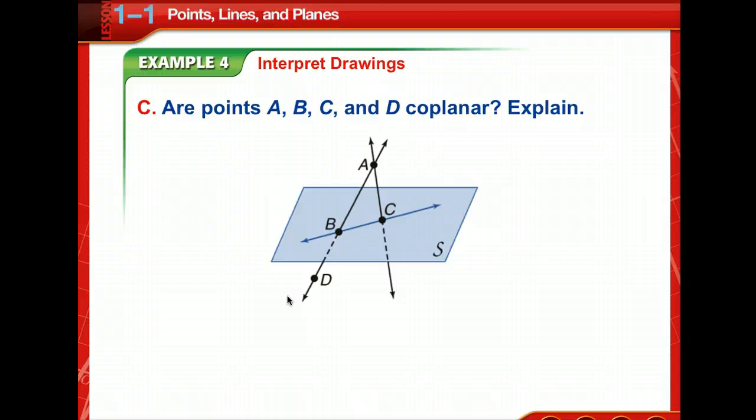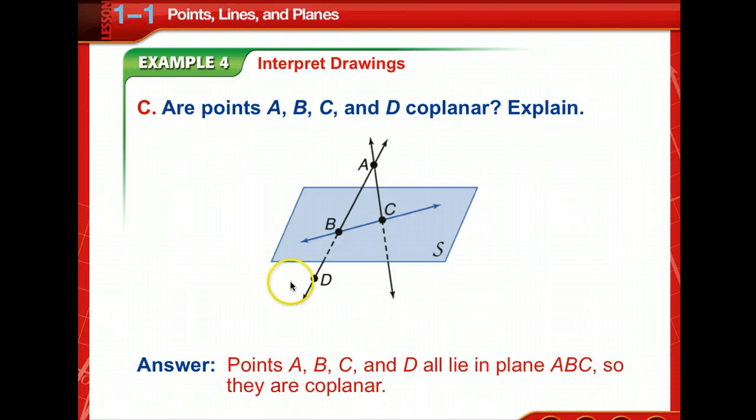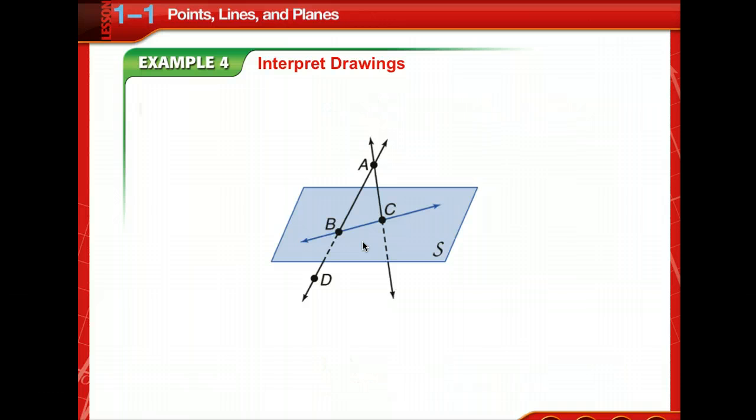Are points A, B, C, D? A, B, C, and D, are they co-planar? Well, they all lie on plane A, B, C. So they are co-planar. Good job. A, B, D are on the same line, and then C is at the third point not on that same line, but in the same plane. So they are co-planar. Good job.